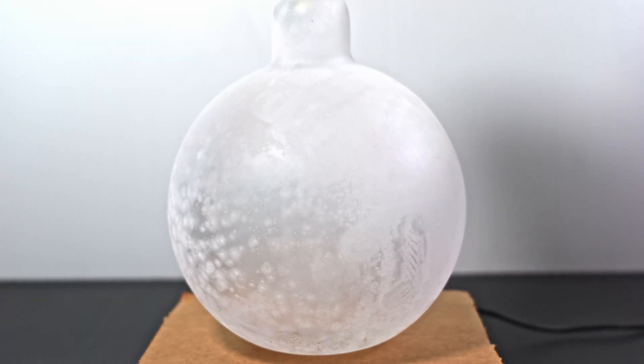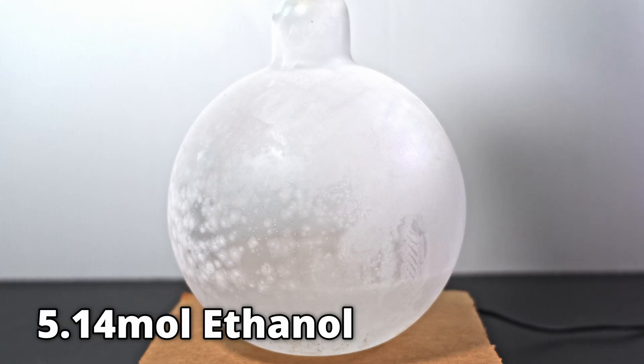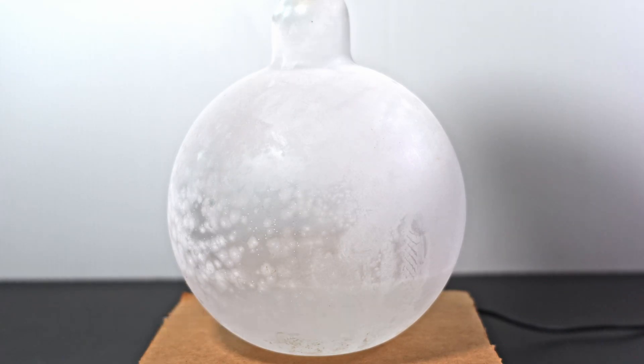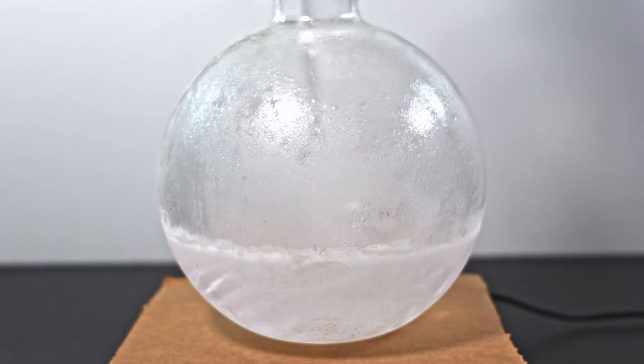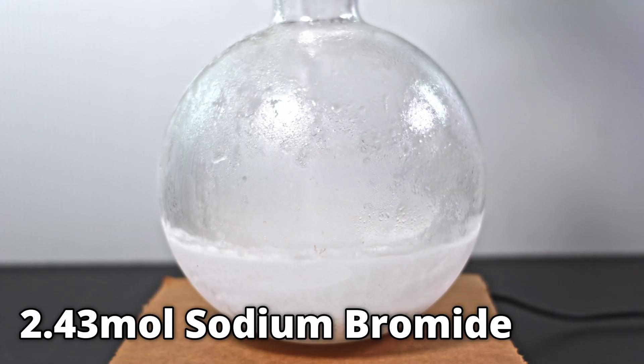In a chilled flask, I pour in 300 milliliters of freezing ethanol. This is approximately 5.14 moles of ethanol. I stir it on high as I add in 250 grams of sodium bromide. This is approximately 2.43 moles of sodium bromide.